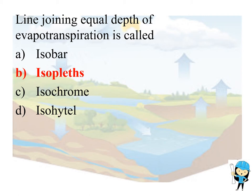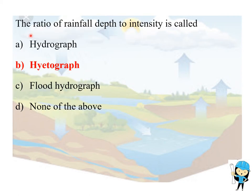The ratio of the rainfall depth to the intensity is called hydrograph. Hydrograph is defined as the graph between discharge versus time.